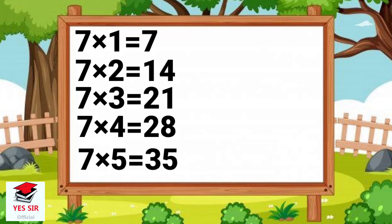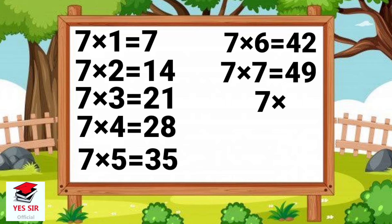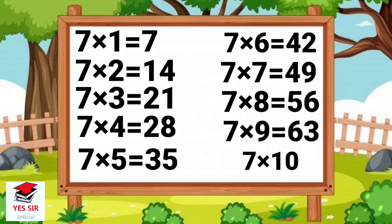7 5's are 35. 7 6's are 42. 7 7's are 49. 7 8's are 56. 7 9's are 63. 7 10's are 70.